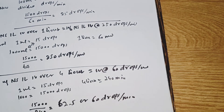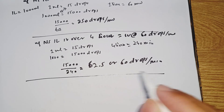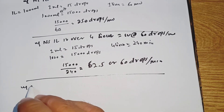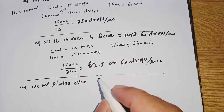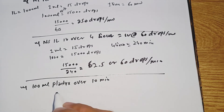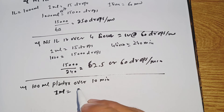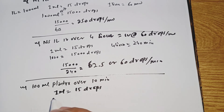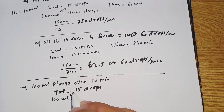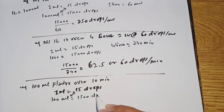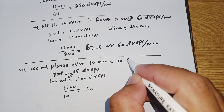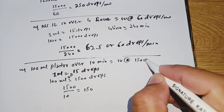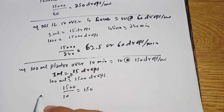We can write that as: infusion normal saline 1 liter IV at the rate of 60 drops per minute. Another example: infusion 100 mL Fladex IV over 10 minutes. One mL is equal to 15 drops, so 100 mL equals 1500 drops. 1500 divided by 10 equals 150 drops per minute.